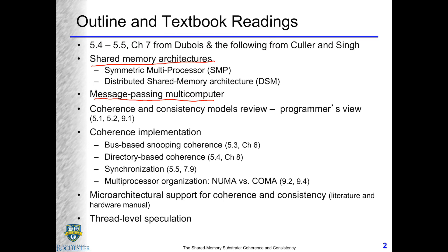In creating that illusion, we encounter problems — the first being coherence and consistency. From the programmer's view these are addressed in the textbook. The rest concerns how to implement cache coherence, which can be done via snooping-based coherence or directory-based coherence, each with their own implementation challenges and optimizations. We'll also cover a more advanced topic: a new way of organizing multiprocessors called cache-only memory access (COMA).